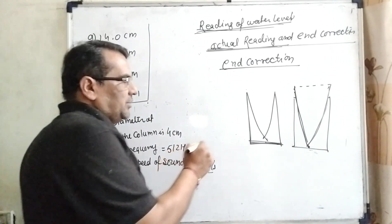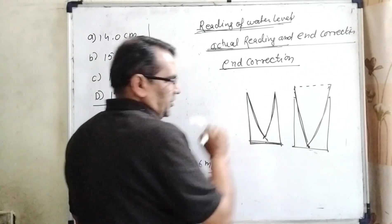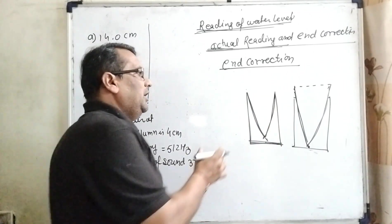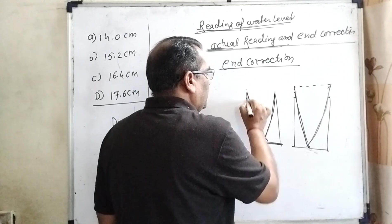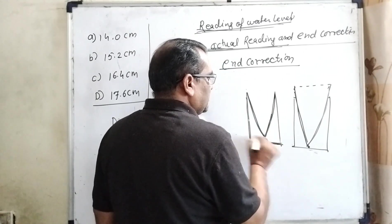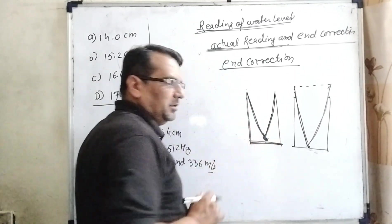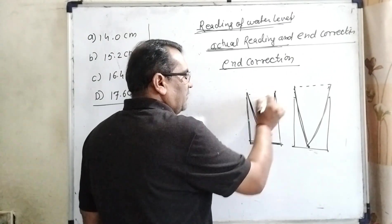So therefore, let us first understand what is end correction. As you know, generally we take a water column where the surface meets. Nodes are formed, and antinodes form at the open surface.